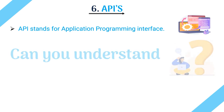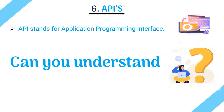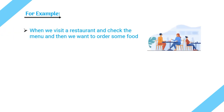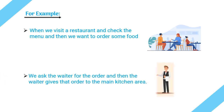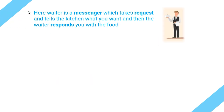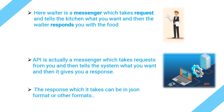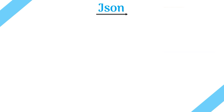The sixth source is API — Application Programming Interface. An API is a connection between computers or computer programs; it is a software interface offering a service to other software. To simplify: imagine visiting a restaurant. You don't go to the kitchen directly — you ask the waiter, who takes your order to the kitchen and brings back the food. Similarly, an API is a messenger that takes your request, tells the system what you want, and returns a response — which can be in JSON format or other formats.